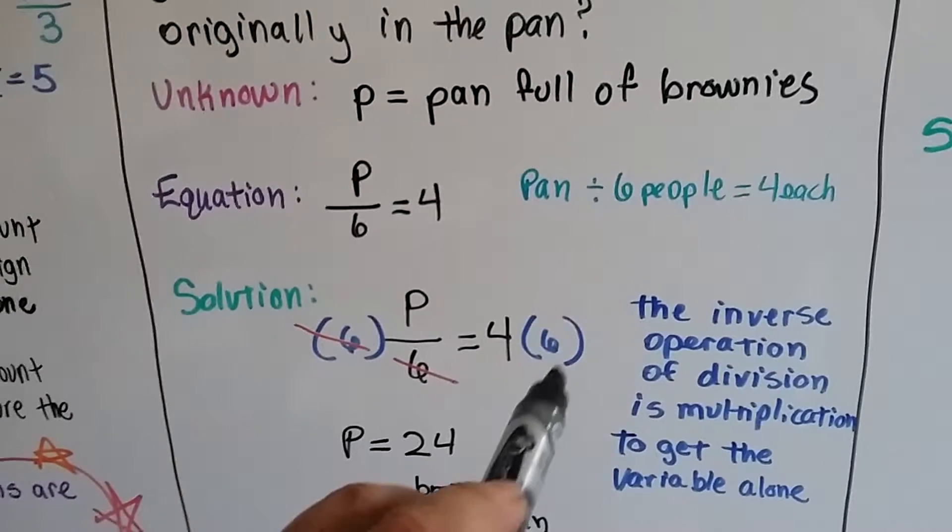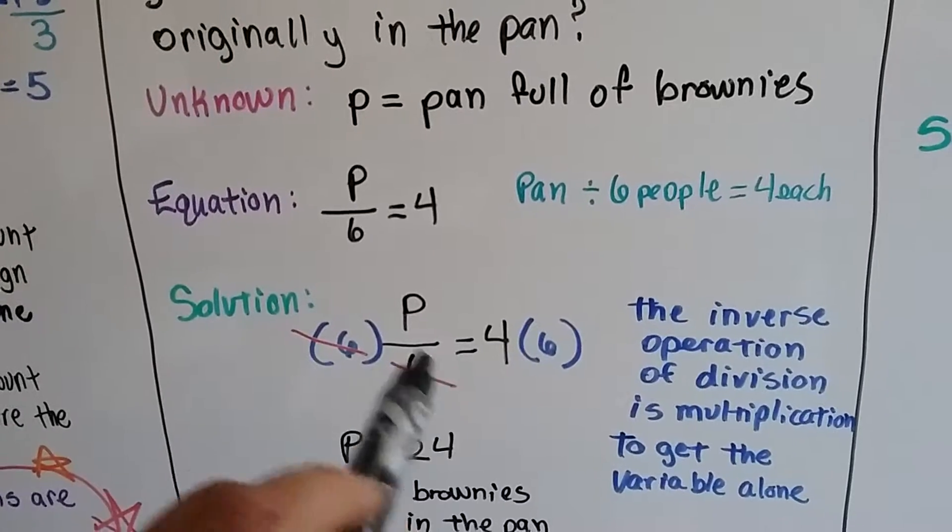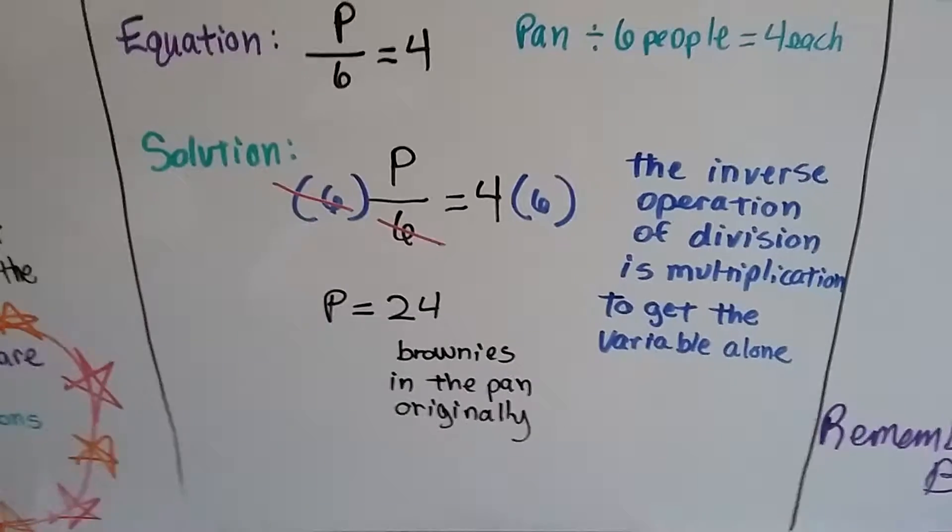So we multiply this side by 6 and this side by 6. And these cancel each other out. And we have p equals 24 brownies in the pan originally.